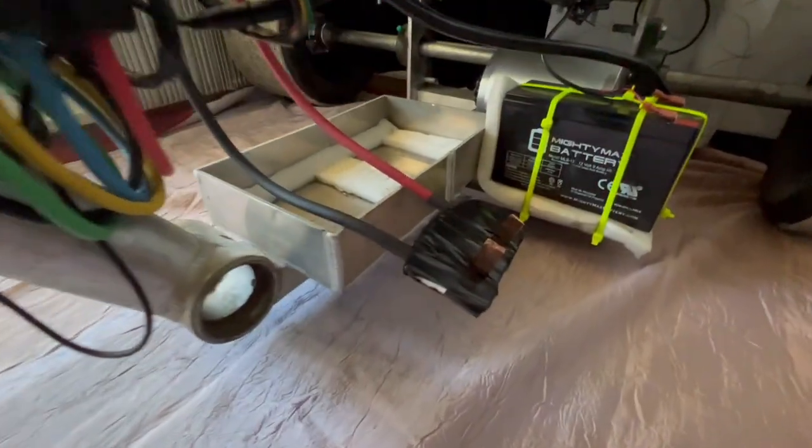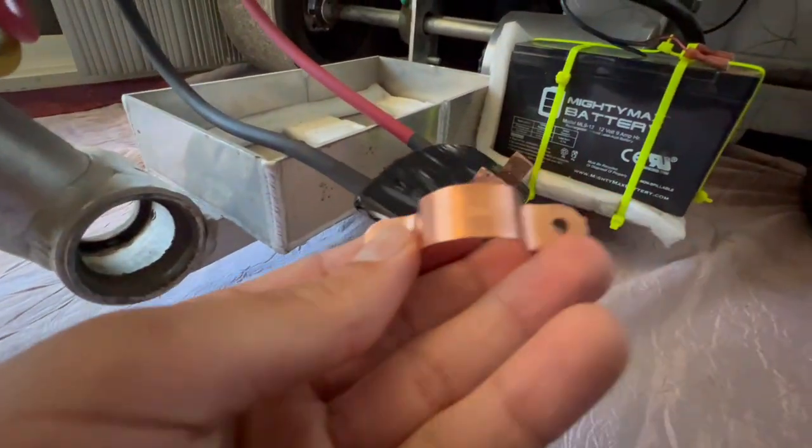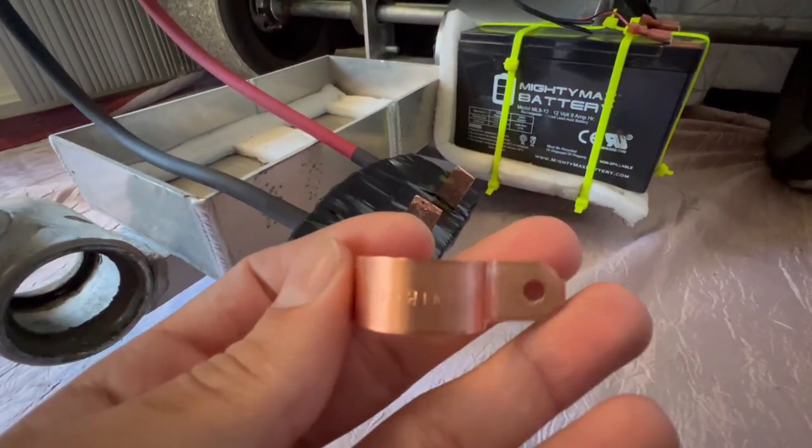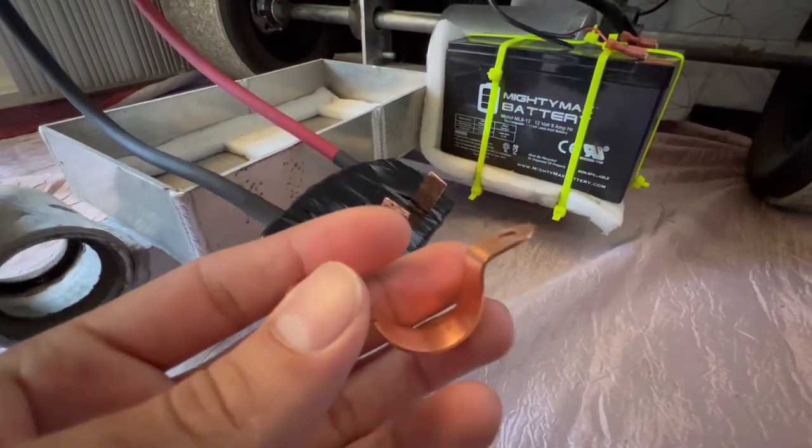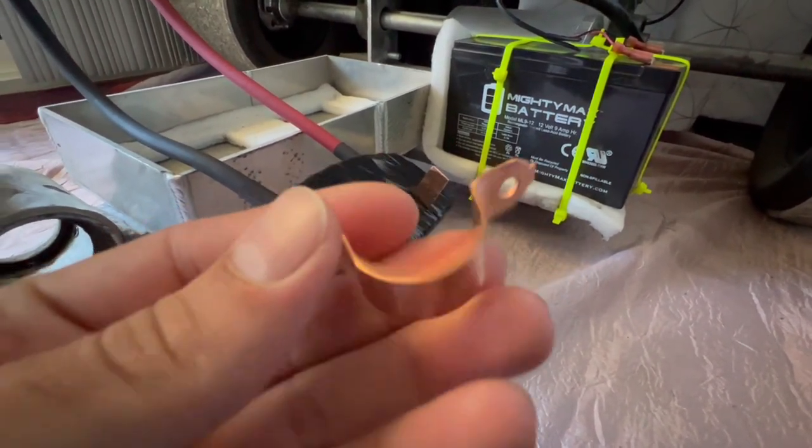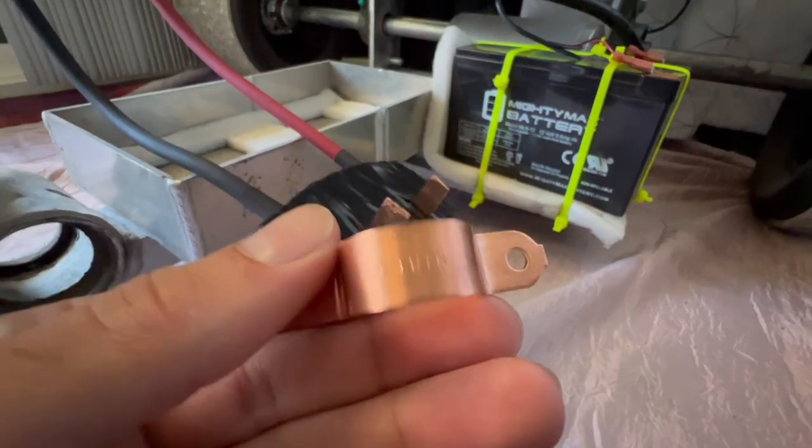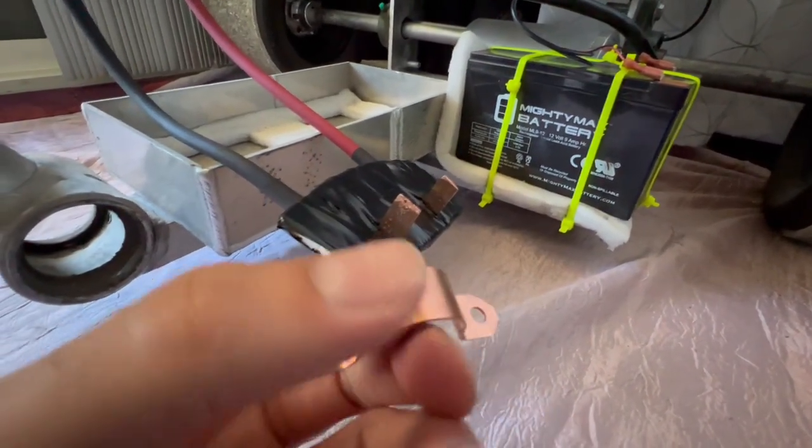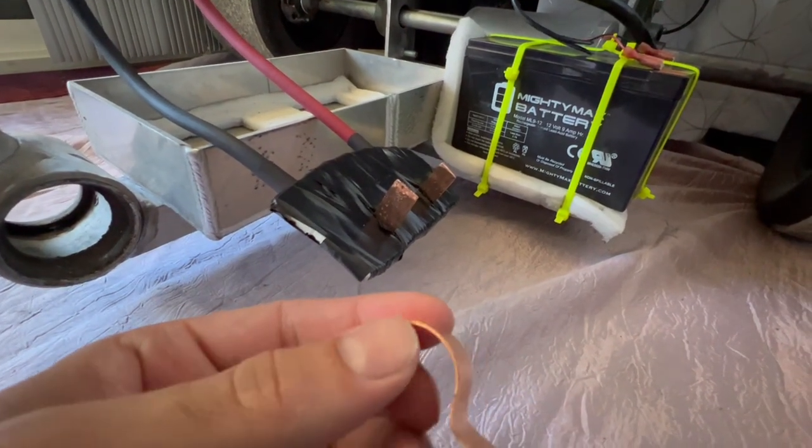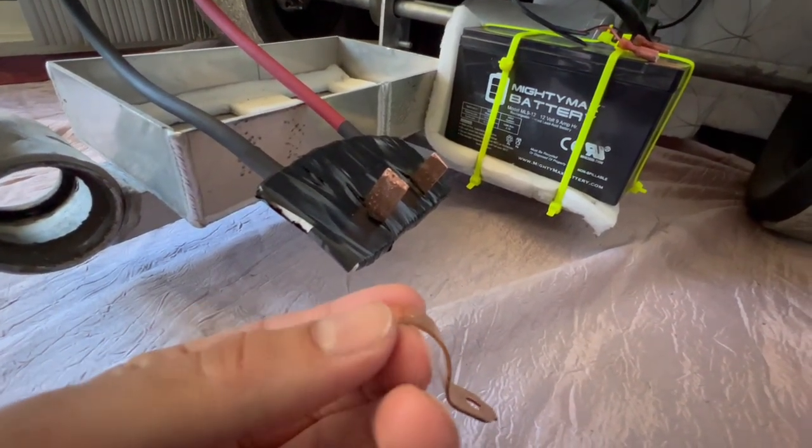This plug here was just made from one of these. I got this from Home Depot. I would just take a magnet with you to Home Depot and make sure that it doesn't stick to it, because they have ones that are just coated in copper. All you really need to do is just chop it up from right in the middle and flatten these sides out.